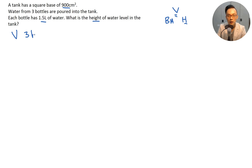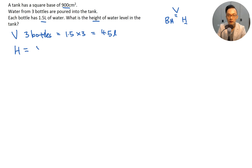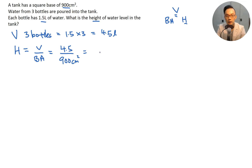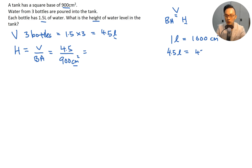Volume of three bottles equals 1.5 liters times 3, which equals 4.5 liters. So height equals volume divided by base area, which is 4.5 over 900 cm squared. We need to remember to convert because this is in liters and this is in square centimeters. So convert liters to cubic centimeters: 1 liter equals 1000 cubic centimeters, so 4.5 liters equals 4500 cubic centimeters. So it's 4500 cubic centimeters over 900 square cm.